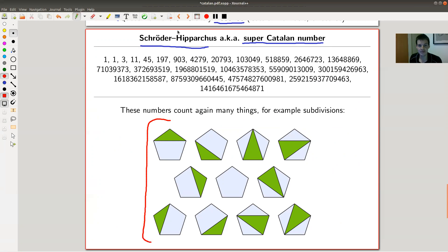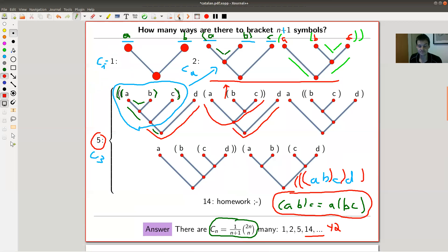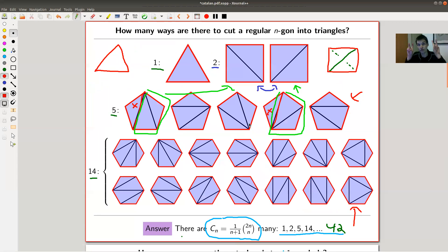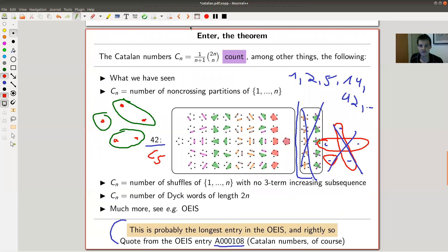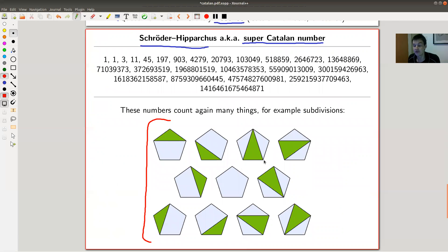But for example, instead of coming back to my first slide, instead of counting triangle decompositions of regular polygons, you could count all decompositions basically of regular polygons. You can count this one as well, but the bottom is certainly not a triangle. And whatever you get will be given by those super Catalan numbers, the generalization of the Catalan numbers. And as you can see, they grow ridiculously fast.